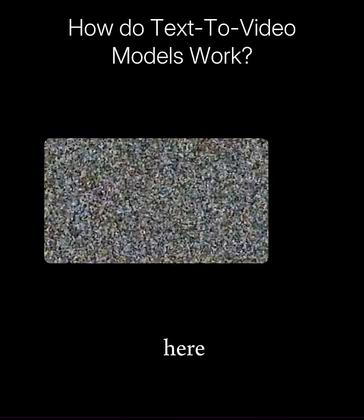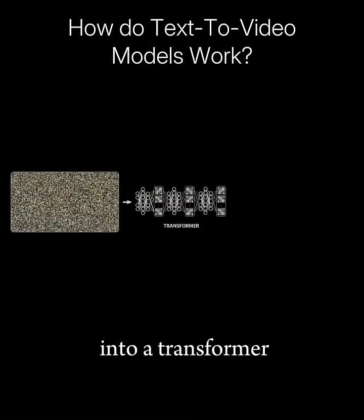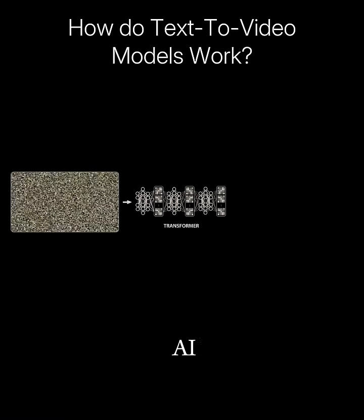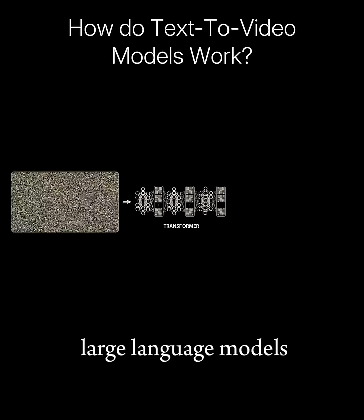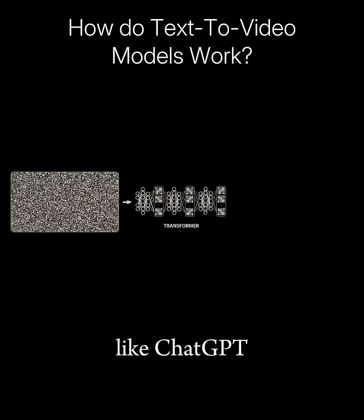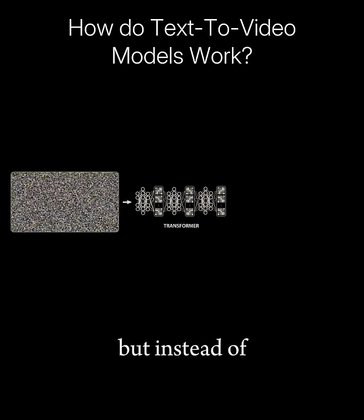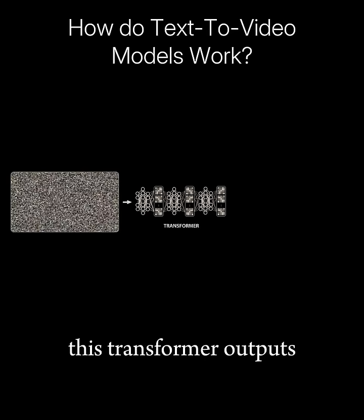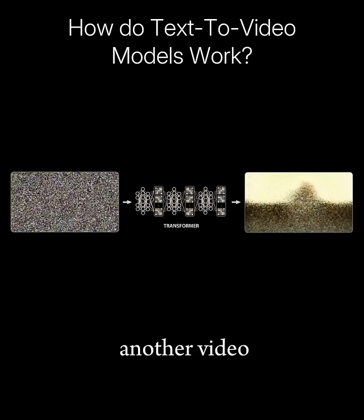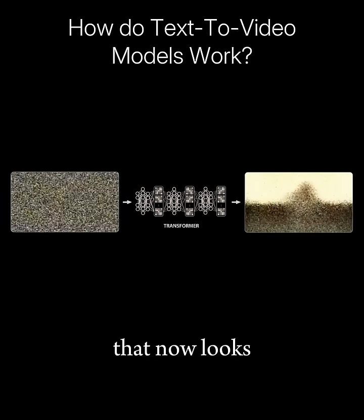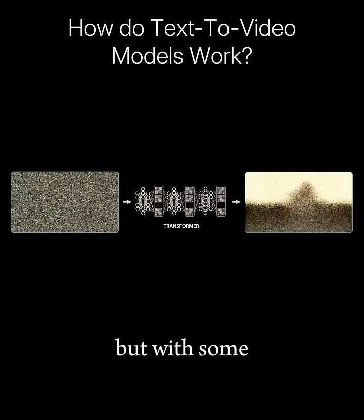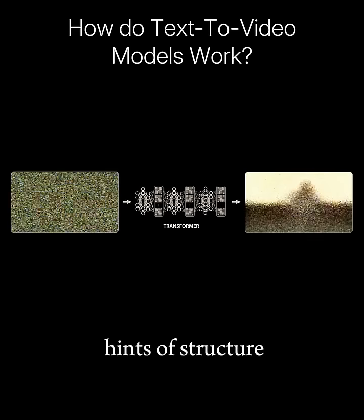From here, this pure noise video is passed into a transformer. This is the same type of AI model used by large language models like ChatGPT. But instead of outputting text, this transformer outputs another video that now looks like this — still mostly noise, but with some hints of structure.